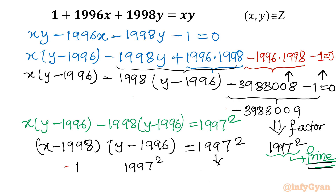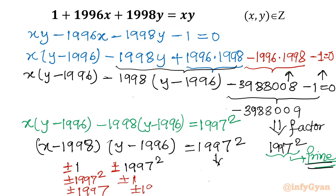If I consider minus signs, then minus times minus is plus. Similarly the reversal: plus/minus 1997 squared and plus/minus 1. And the third option is each factor equals plus/minus 1997 and plus/minus 1997. So these three cases give us the possibilities to solve.